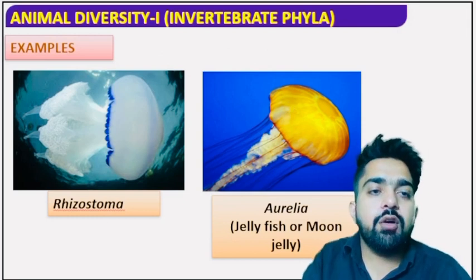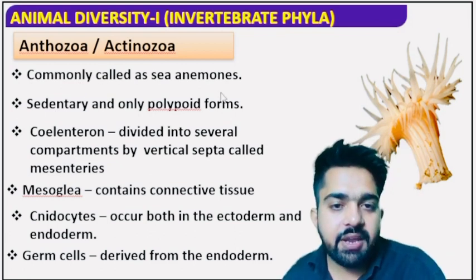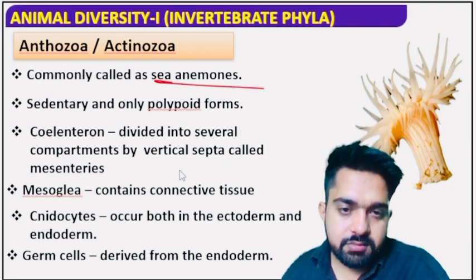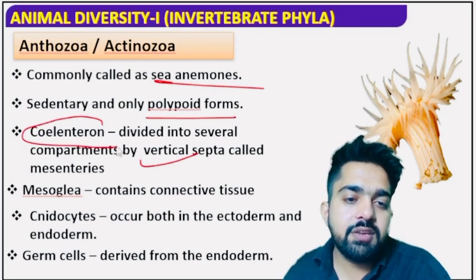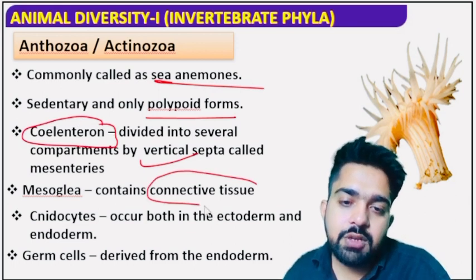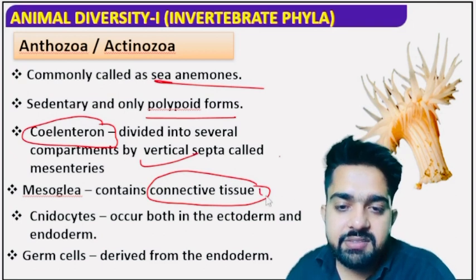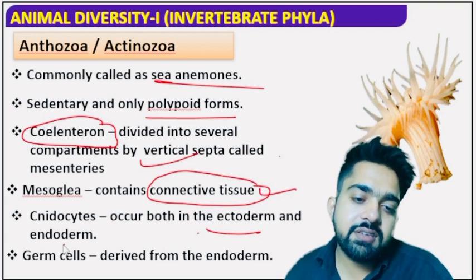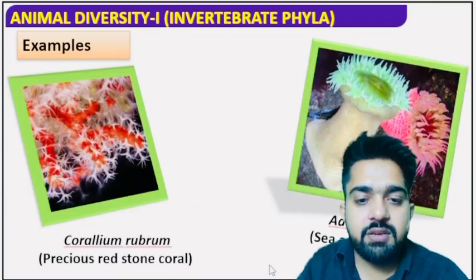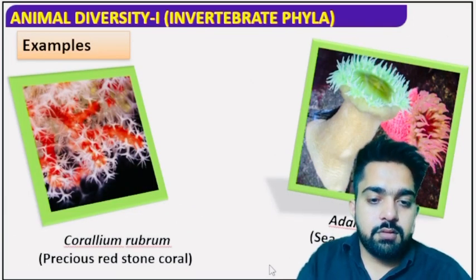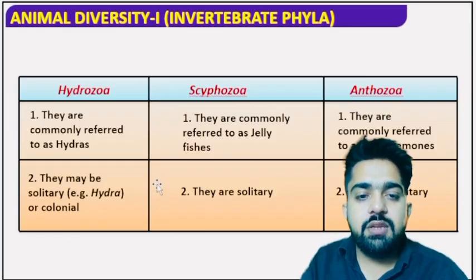Examples of Scyphozoa are Rhizostoma and Aurelia. In the last class, Anthozoa — also called Actinozoa, meaning sea animals — only polypoid form is present. The body cavity or coelenteron is divided into different compartments. Mesoglea contains connective tissue. Cnidocytes can arise both ectodermally and endodermally. Germ cells are of endodermal origin. Examples include Corallium rubrum and sea anemones.